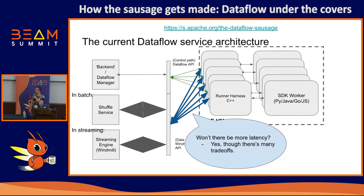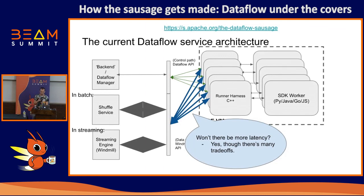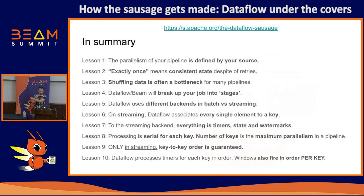We also moved the shuffle off the VMs into a managed service — Shuffle Service for batch and Streaming Engine for streaming. These are the data paths: large chunks of data go to a Google-managed backend and are shuffled there. Yes, there's more latency since shuffling is no longer on the VM, but the trade-off is worth it: the backend shuffles can be super large scale. The biggest Dataflow job was a huge Spotify Wrapped job that shuffled an enormous amount of data — they're going to talk about their shuffle optimizations on Wednesday.